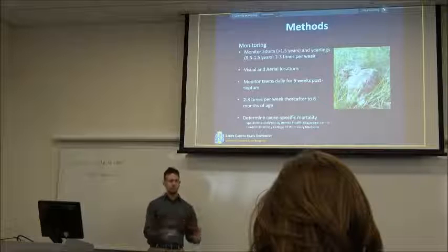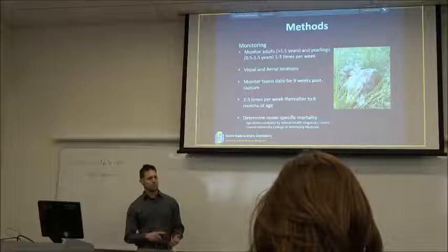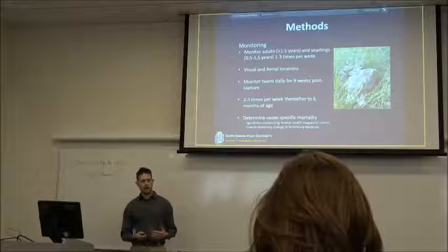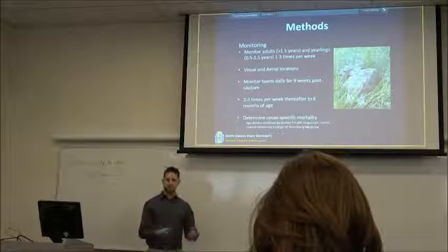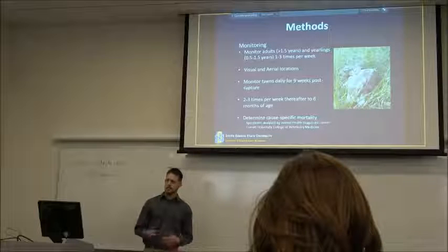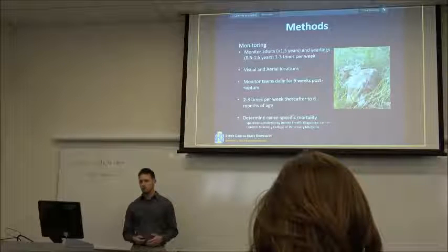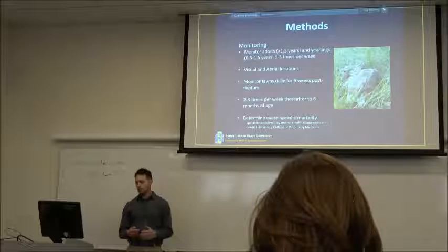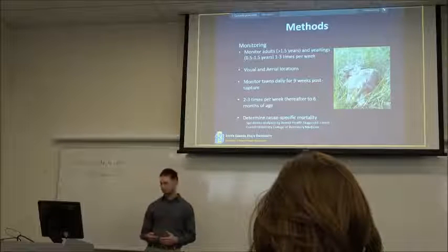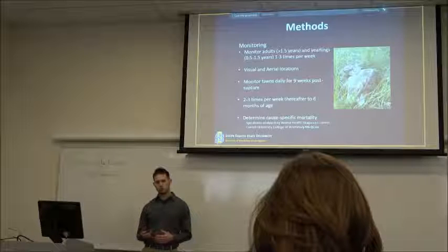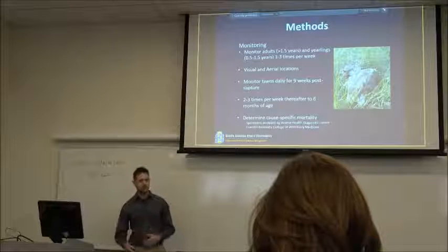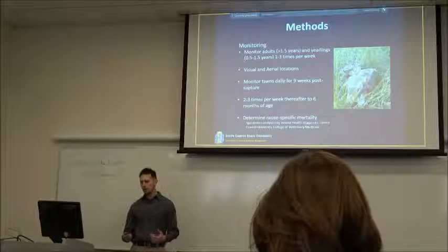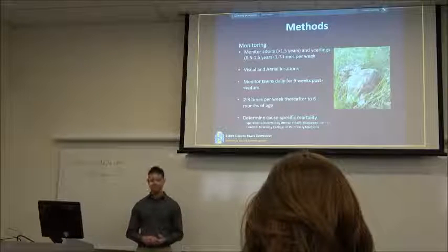We're considering adults a year and a half or older in age and yearlings to be a half a year to a year and a half. Those individuals will be the premise for our home range movement and resource selection analysis. So we want to monitor those individuals one to three times per week and collect by visual and aerial observations. Aerial observations will be collected using a Cessna 172 fixed wing aircraft with telemetry equipment.